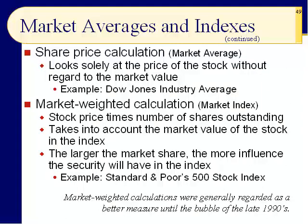The difference between a market average and a market index is that an average just uses the share price. The reason this started is because that's what they had back in 1896 when the Dow was started. But very quickly they realized that's not going to work when you have a large list of stocks, because some stocks are very large and some are very small — you're comparing apples to oranges. You need some way to compare the two so that the large companies have more weight. That's an index — a market-weighted calculation.